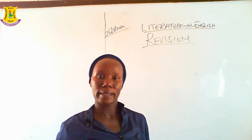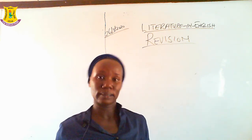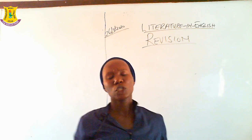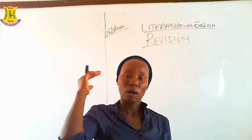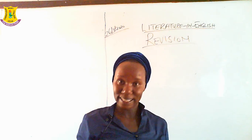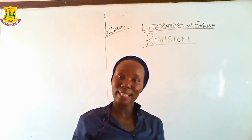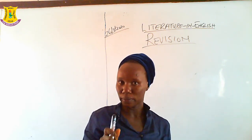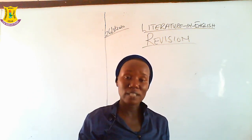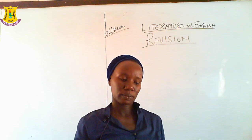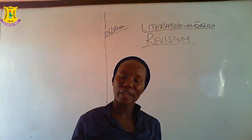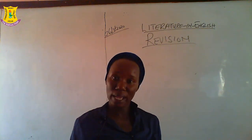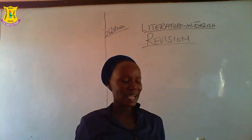Under Session A, we have 2 texts that we've read: Blood of a Stranger and Abyss of Corruption. We have to look at 4 questions under Session A. We have to follow instructions very well. Before you start your exam, first look at the instructions in each session. Under Session A, which is African Drama, we have Blood of a Stranger — 2 questions.